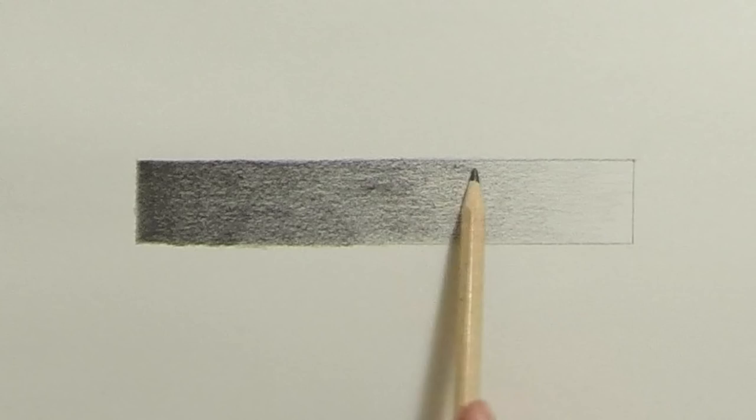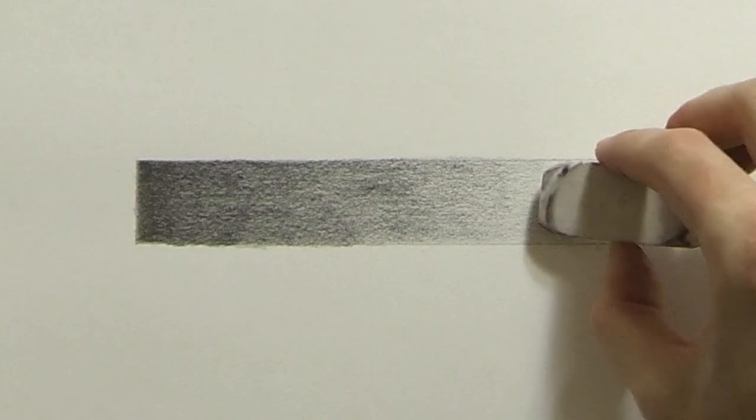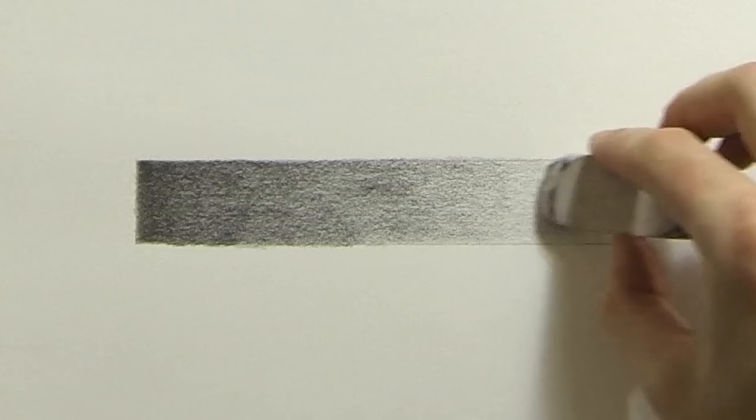But even still, charcoal can get almost black. So if I was using charcoal for this, it would have looked a lot different. There you can see I'm lightly using an eraser to kind of lighten up some of the values there because I realized I was going a little too dark. And I just needed some of those dark lines erased.